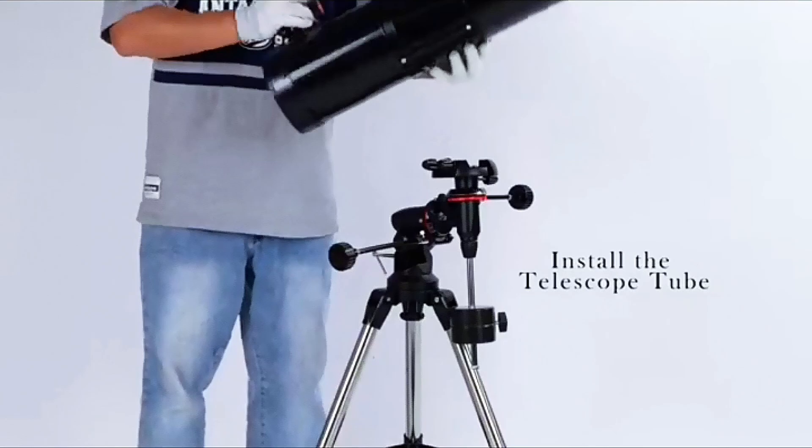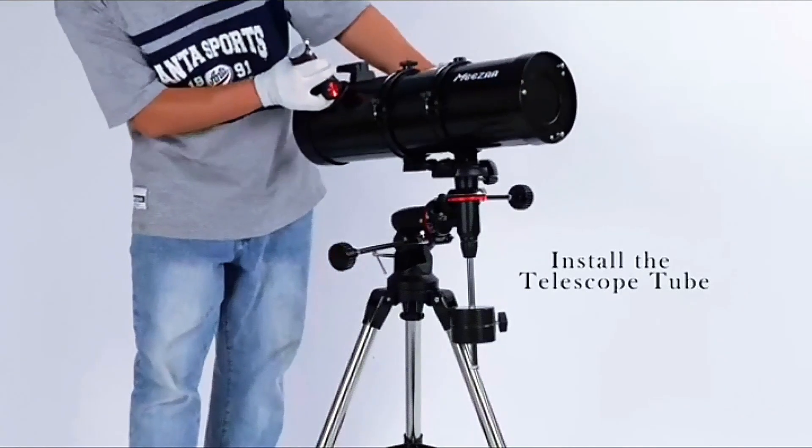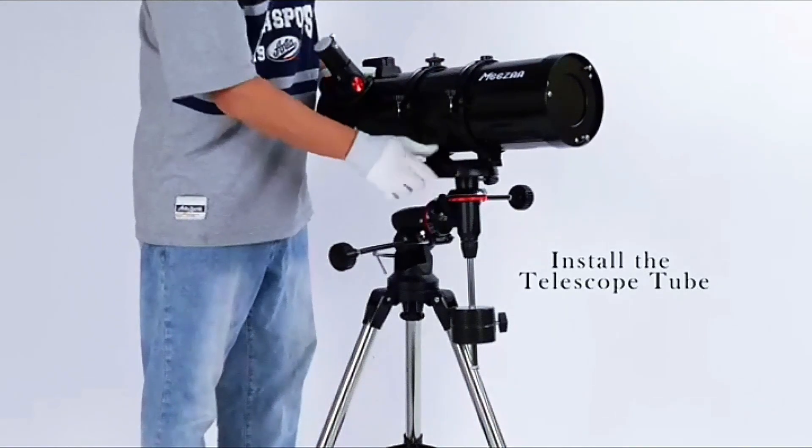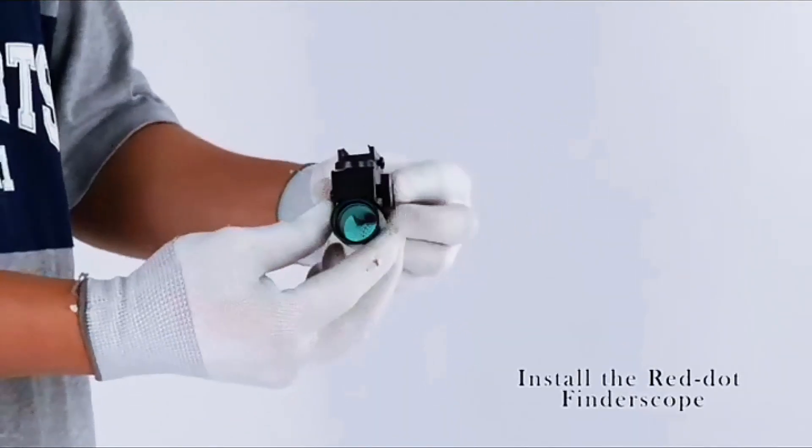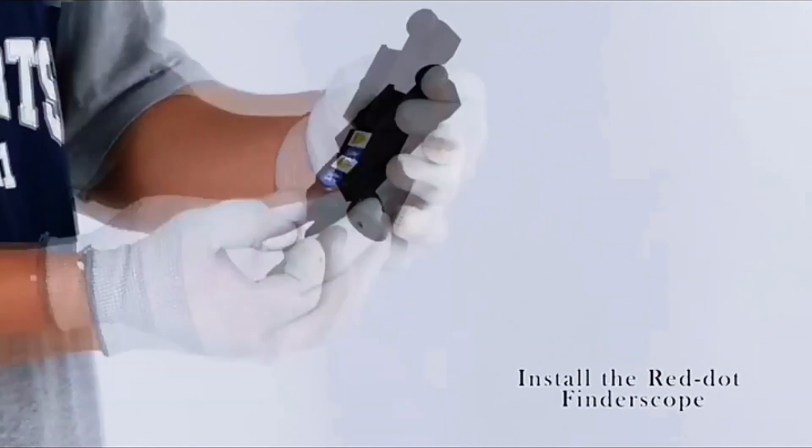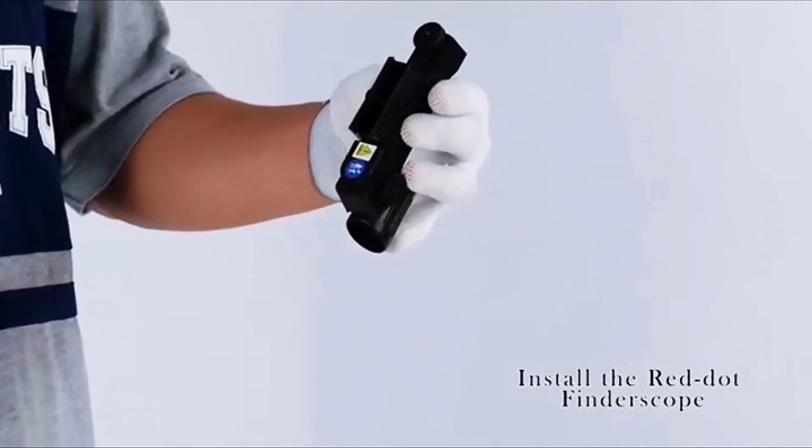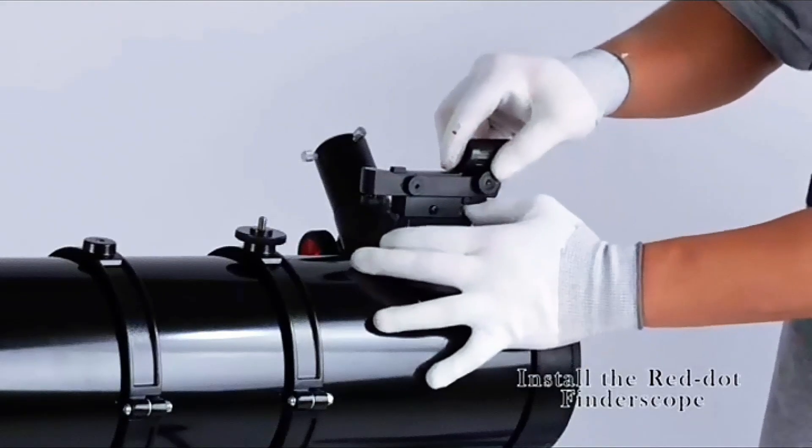The telescope's optical capabilities are impressive, providing crisp and clear images of the night sky. You can easily observe the moon's craters, the rings of Saturn, and the vibrant colors of Jupiter's atmosphere. The build quality is robust with a smooth and sturdy mount that makes tracking celestial objects a breeze.